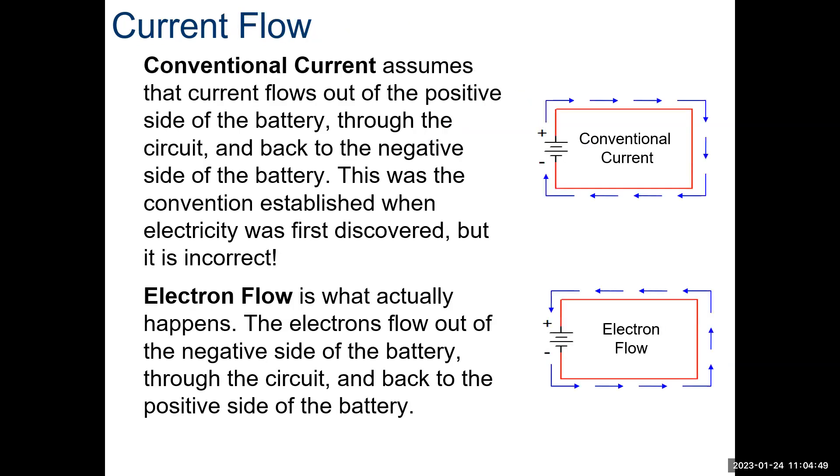All right. So, there's conventional current, and then there's electron flow. The difference is conventional current assumes that current flows. All right. They're back, so I'm going to pause. This is good for now, and I'll continue in a while.